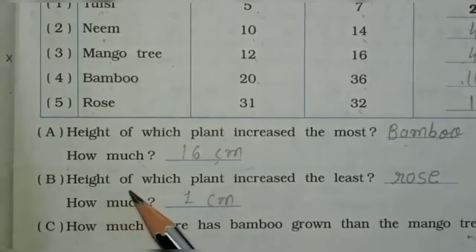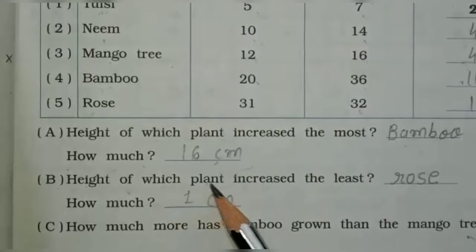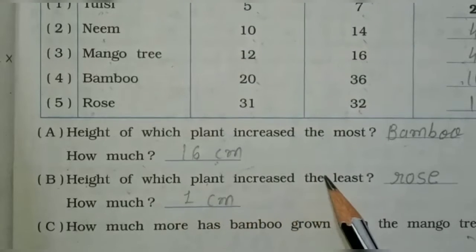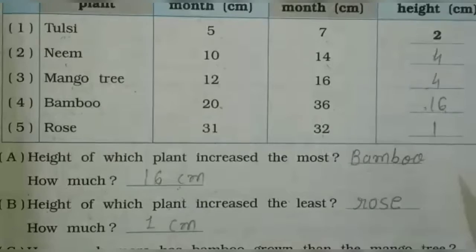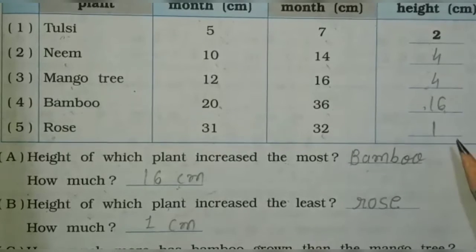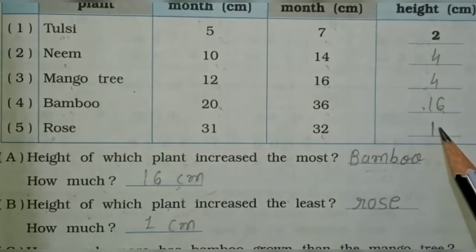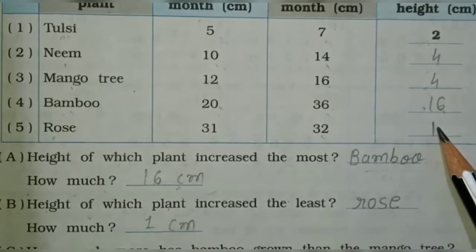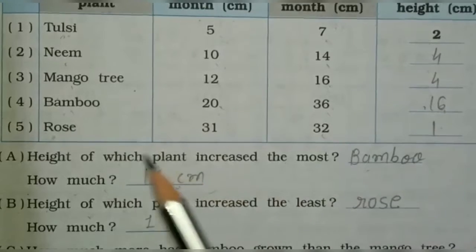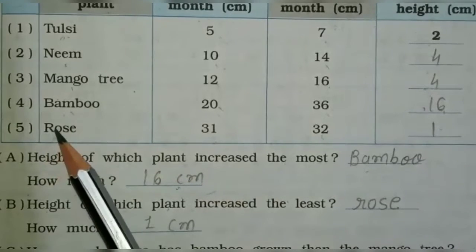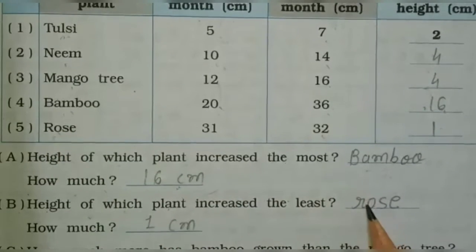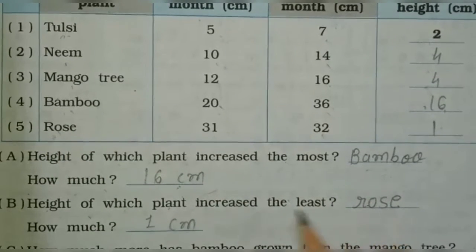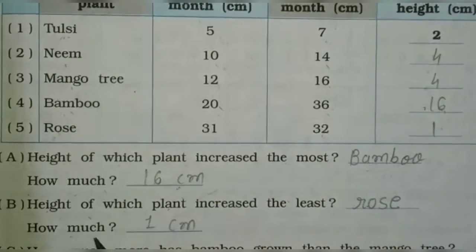Next: height of which plant increased the least? Yani, sabse kam — the least is 1 centimeter, which is rose. Write here: rose, and how much? 1 centimeter.